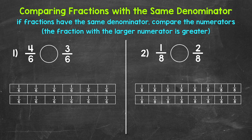Let's jump into number one, where we have four-sixths and three-sixths. So reading this from left to right, we have four-sixths is greater than, less than, or equal to three-sixths. Which fraction is greater? Well, if we have fractions with the same denominator, all we have to do is compare the numerators — the top numbers. The fraction with the larger numerator is greater. Now here, we're going to use fraction strips to help us visualize this.